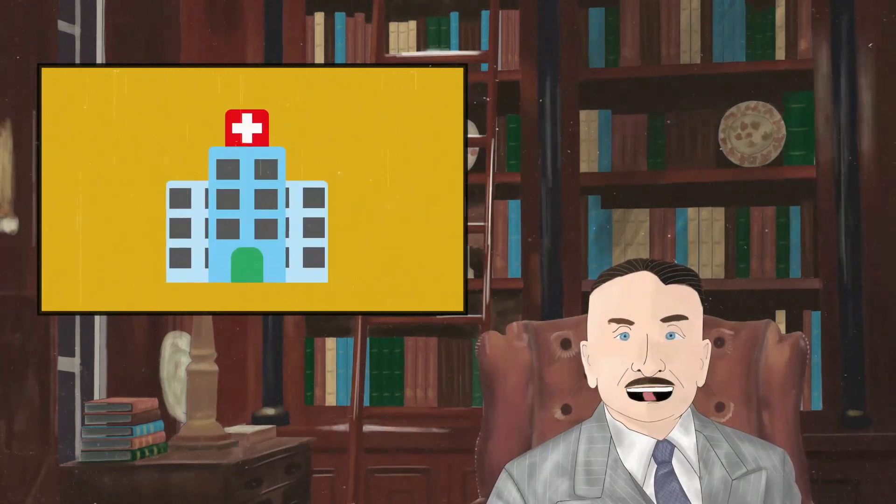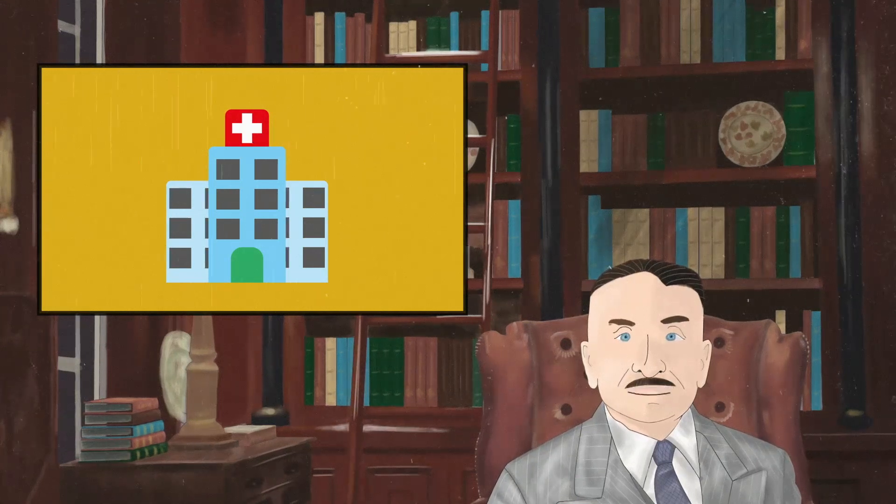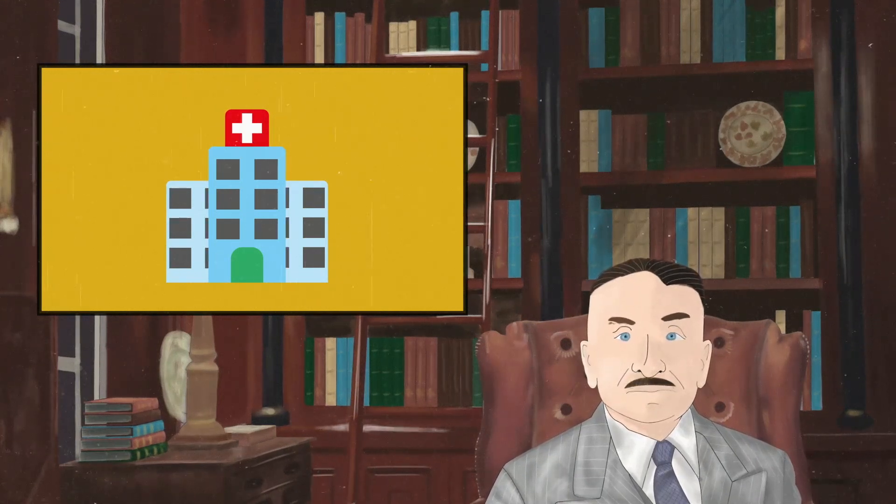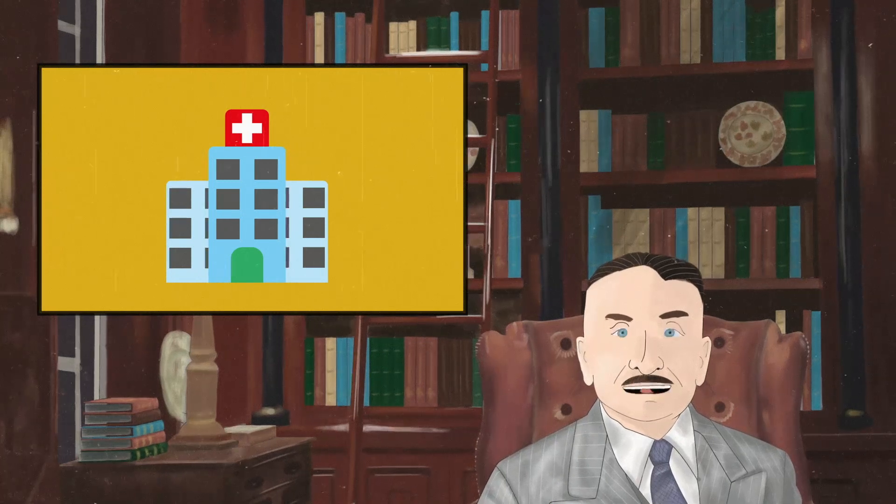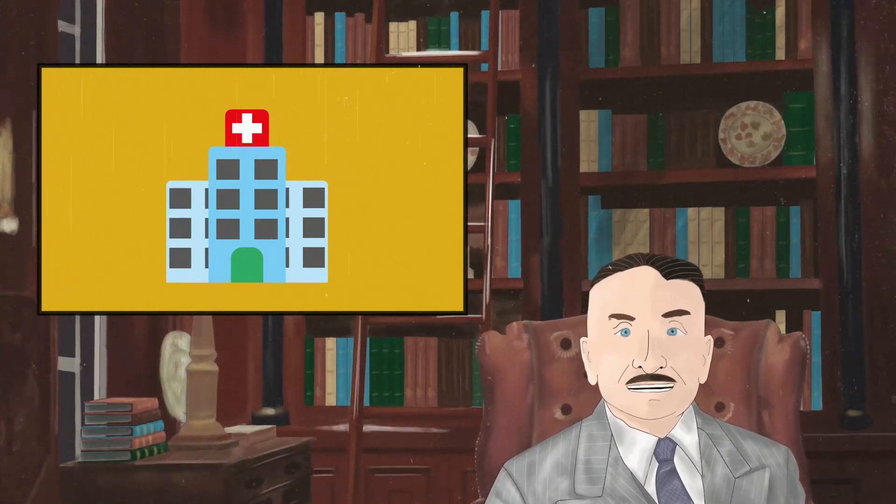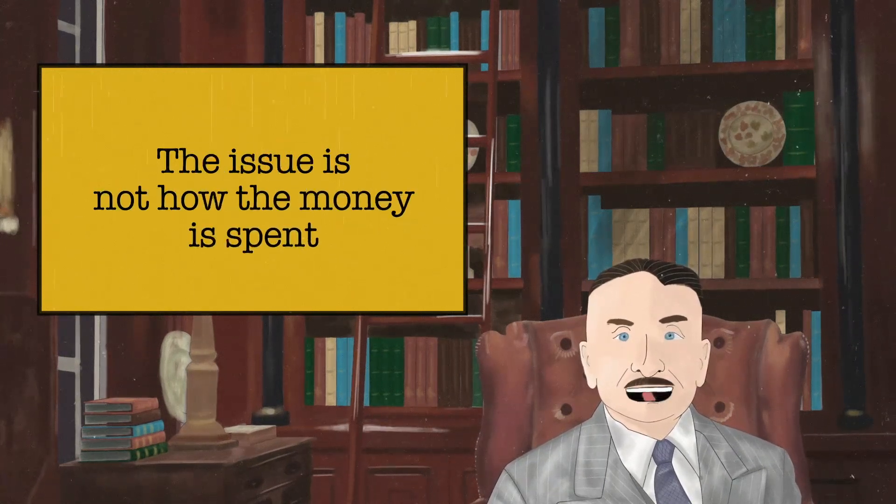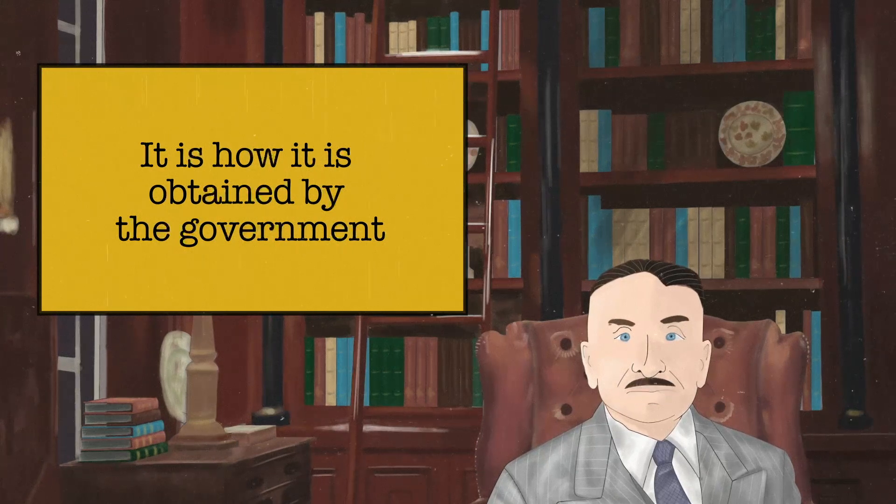I chose the example of a hospital precisely because it is so common to hear that inflation is only bad when it is used for bad ends. So let's assume that the government always uses the new money it is issued for the best possible purposes. It turns out that the issue is not how the money is spent, it is how it is obtained by the government.